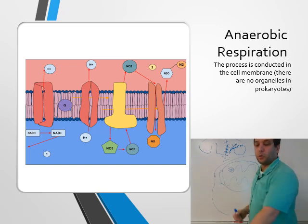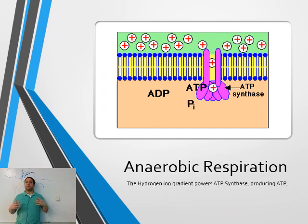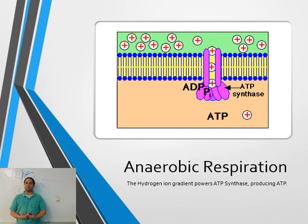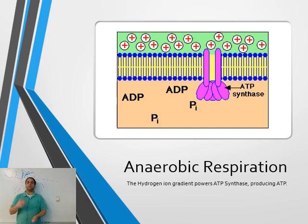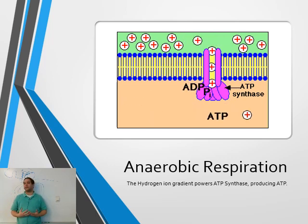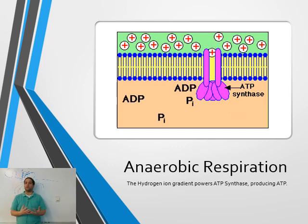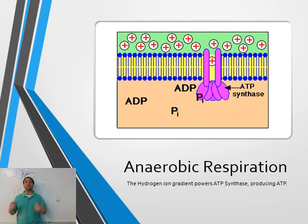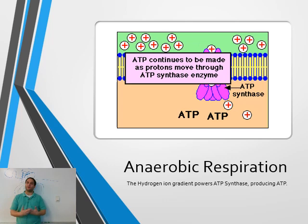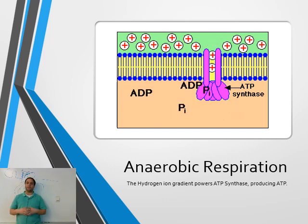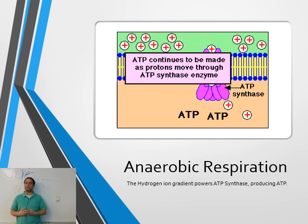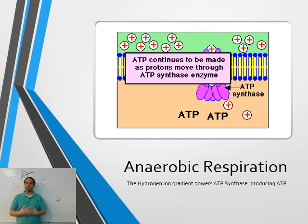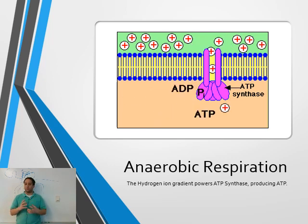This process happens in organisms with no organelles. We're still moving hydrogen across a gradient - this is respiration. It's just respiration that happens without oxygen. You're using nitrite as that final electron acceptor, still pushing hydrogen across the gradient, still accepting it through ATP synthase, still making a lot of ATP. It's just a different method - no oxygen involved, so it is an anaerobic process. Anaerobic respiration is very different from fermentation. Both lack oxygen, but that's where their similarities end.